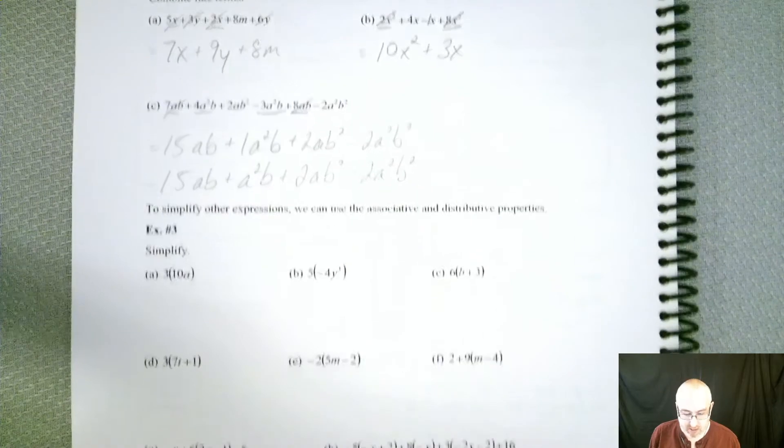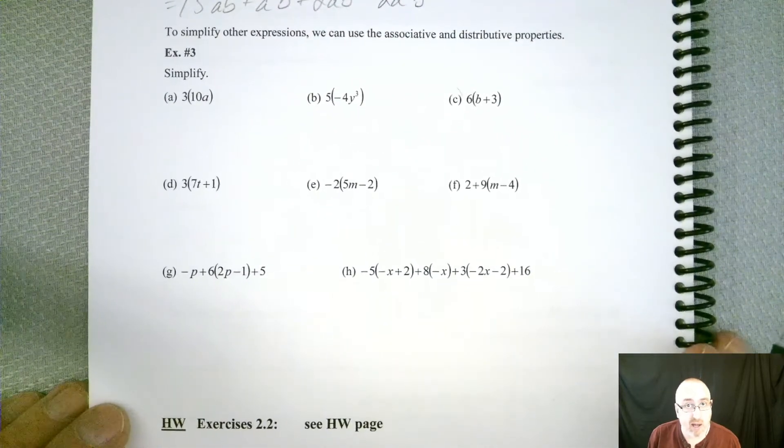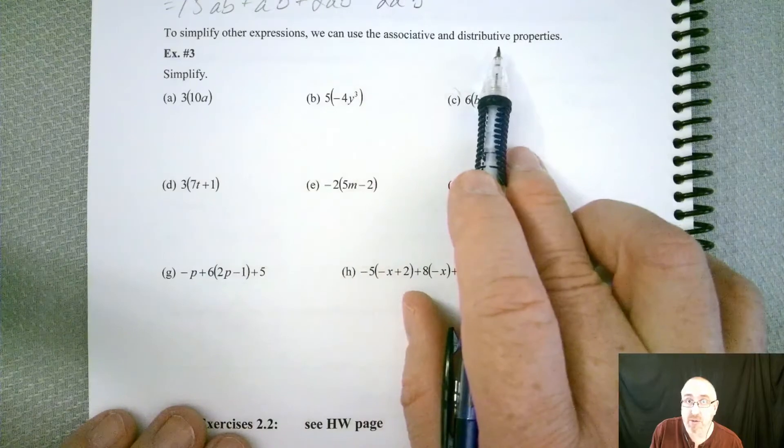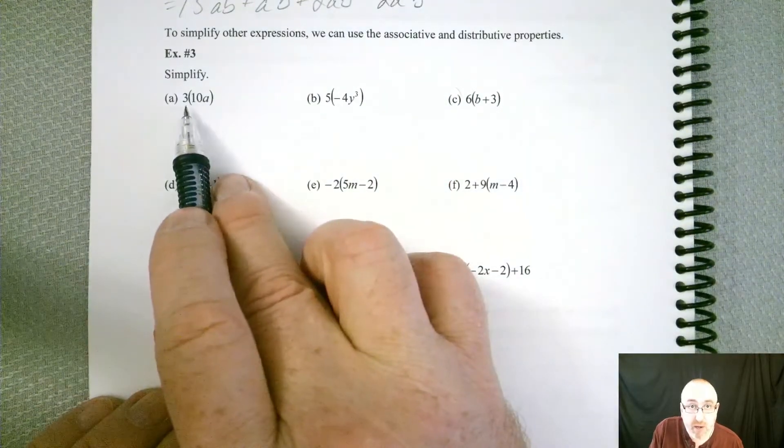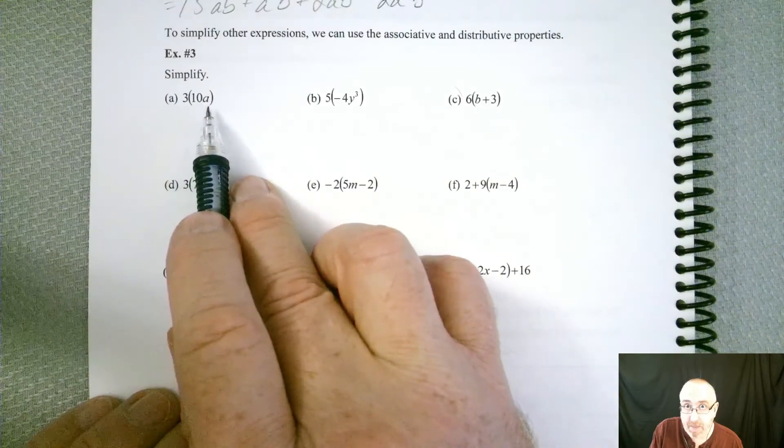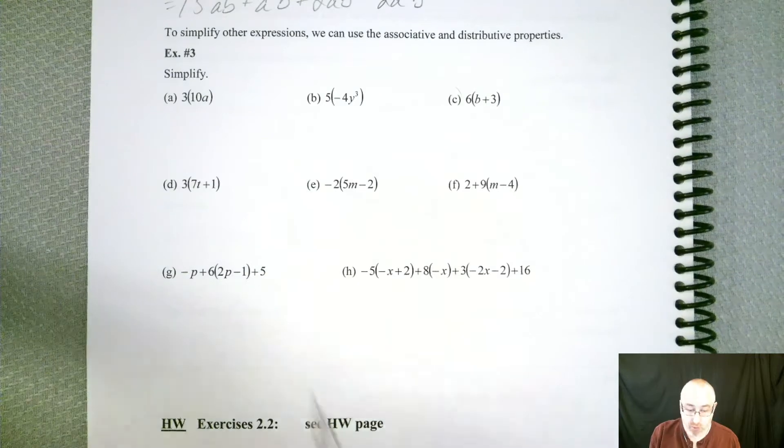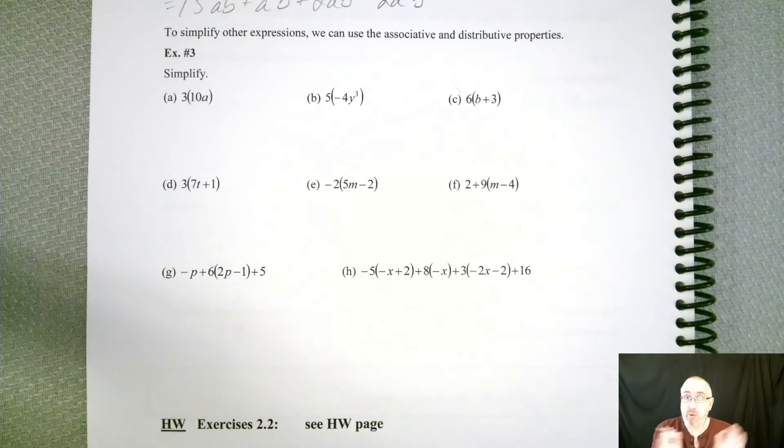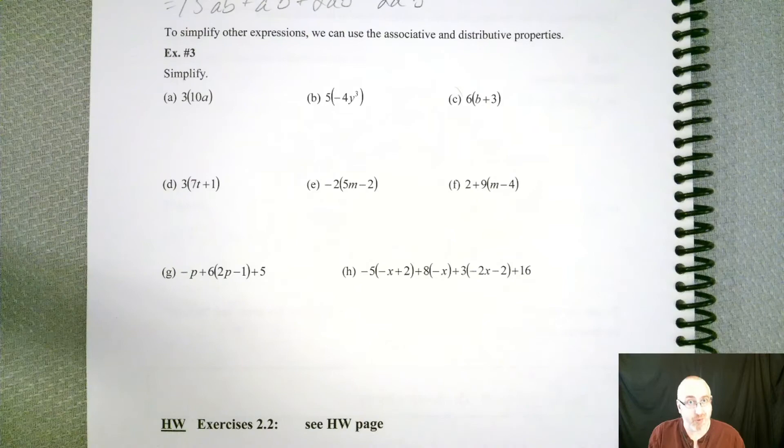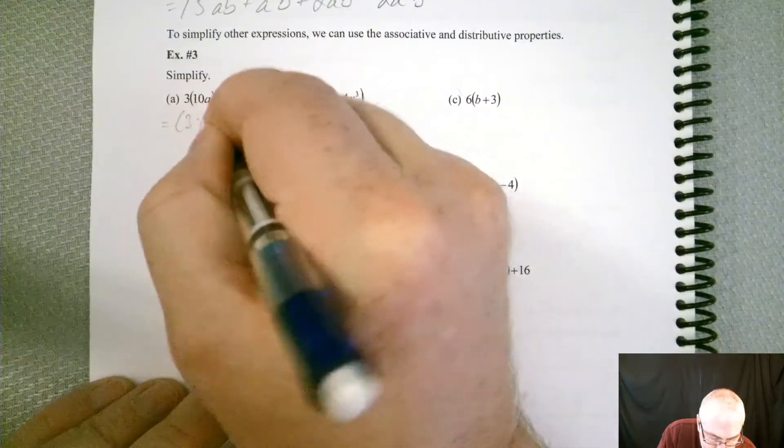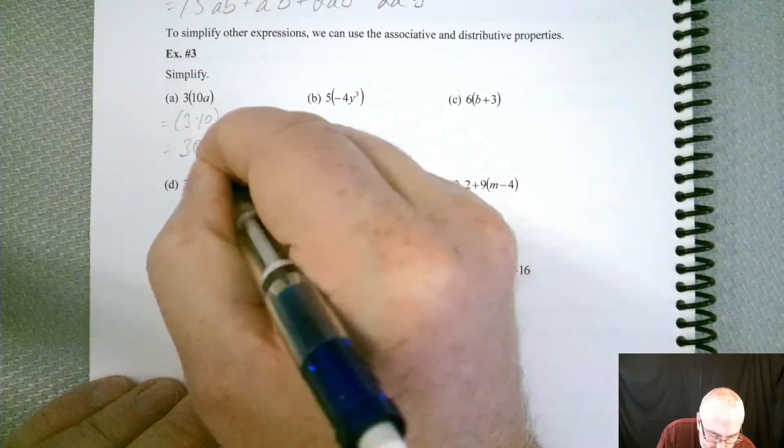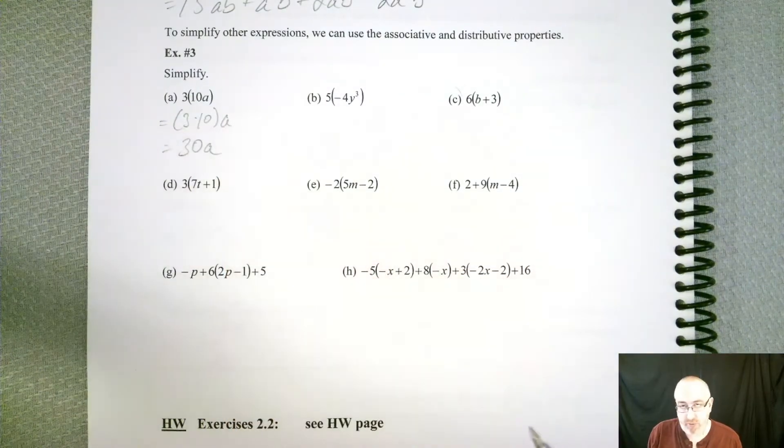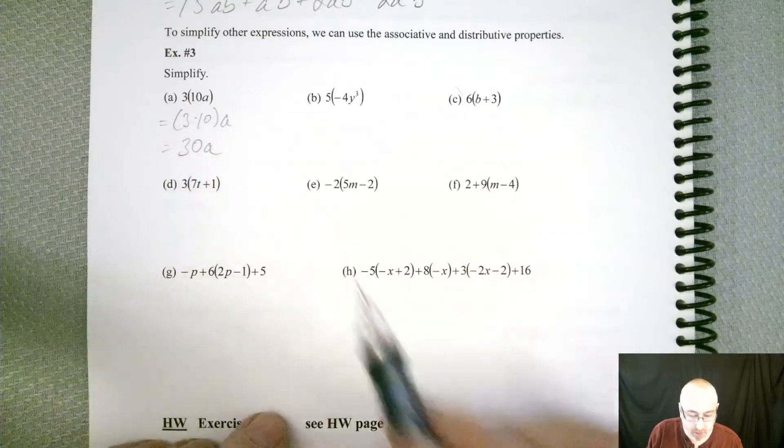All right, let's take a look at the last set of problems. Although there's a lot, it will go fast. So for the last part of this, we're going to use the associative and distributive properties to simplify them down. So in the first example, we got 3 times 10a. So what does the associative property say that we can do with those parentheses? Remember, the associative property says we can change the grouping around. So we can move those parentheses from the back two to the front two. So that's what we're going to do. And when we do that, we can combine those numbers together to get 30. Now, you're probably saying, do we have to show that step? No, you don't have to show that step. But that's what's happening behind the scenes. So just so you know.